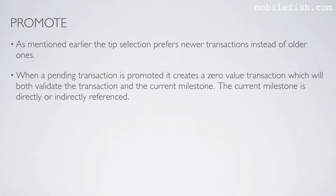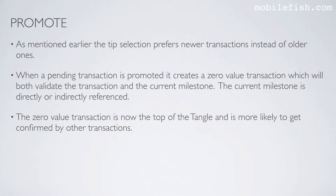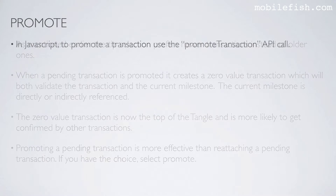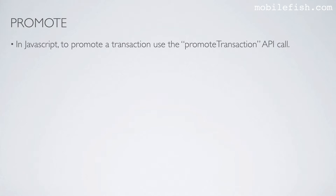When a pending transaction is promoted, it creates a zero value transaction which will both validate the transaction and the current milestone. The current milestone is directly or indirectly referenced. The zero value transaction is now the top of the tangle and is more likely to get confirmed by other transactions. Promoting a pending transaction is more effective than reattaching a pending transaction — if you have the choice, select promote. In JavaScript, to promote a transaction use the promote transaction API call. You can keep promoting until your transaction confirms.